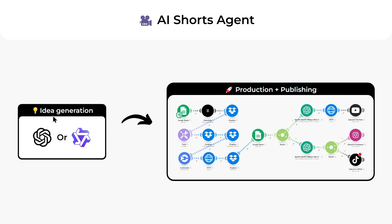For idea generation, we ask ChatGPT or Quen.ai to extract 100 quotes from a YouTube video's full transcript, and those quotes get added to a Google spreadsheet. Then the agent takes a quote from the spreadsheet, generates an intro voiceover using ElevenLabs, and edits the whole video with subtitles using an app called Creatomate.